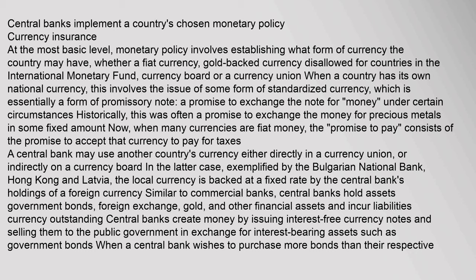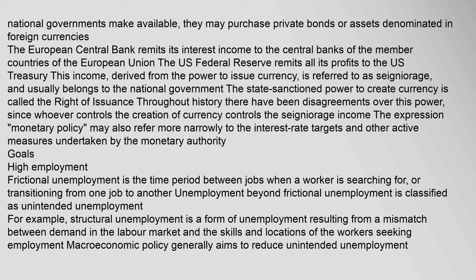A central bank may use another country's currency either directly in a currency union, or indirectly on a currency board. In the latter case, exemplified by the Bulgarian National Bank, Hong Kong and Latvia, the local currency is backed at a fixed rate by the central bank's holdings of a foreign currency. Similar to commercial banks, central banks hold assets — government bonds, foreign exchange, gold, and other financial assets — and incur liabilities. Central banks create money by issuing interest-free currency notes and selling them to the public in exchange for interest-bearing assets such as government bonds. The income derived from the power to issue currency is referred to as seigneurage, and usually belongs to the national government. The state-sanctioned power to create currency is called the right of issuance.